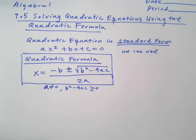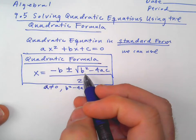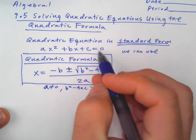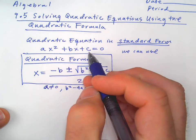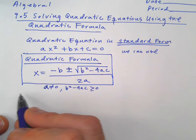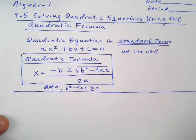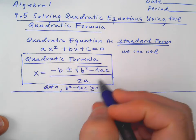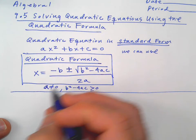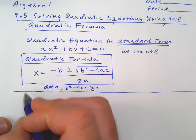The way they came up with this formula was actually by using completing the square on the generic standard form equation. We did completing the square before, but I'm not going to show you that — it's a bit complicated. This is more of a memorized formula that works well. And if you can't factor, this works for ugly answers.